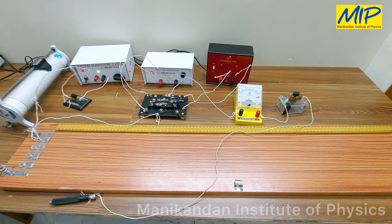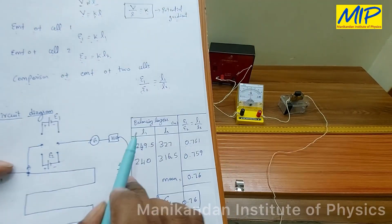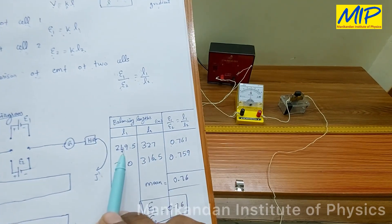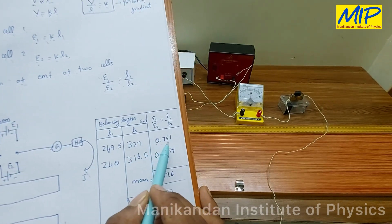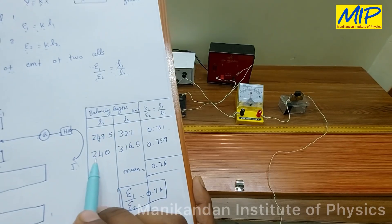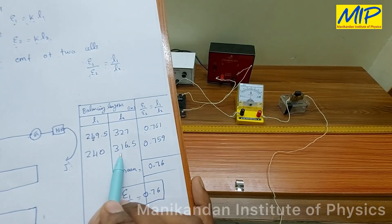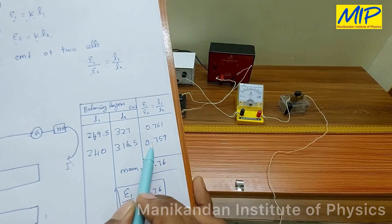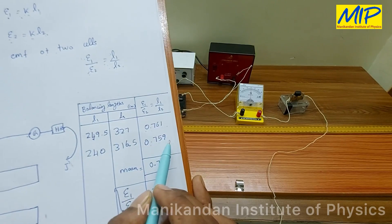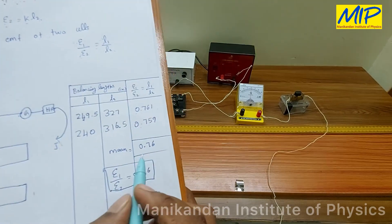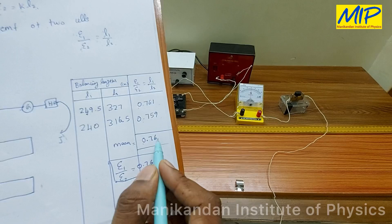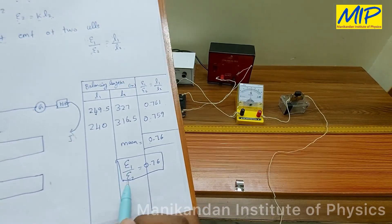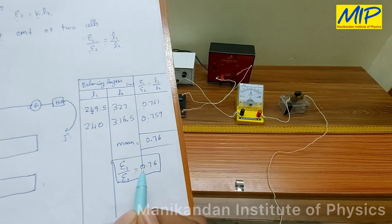Now I will explain the calculation part. Taking the ratio of L1 and L2, which equals E1 by E2: for the first observation, L1 by L2 equals 249.5 by 327, which gives 0.761. For the second observation, L1 is 240 and L2 is 316.5, giving a ratio of 0.759. Taking the average of these two values, I get 0.76. So the ratio of the EMF of E1 to E2 is equal to 0.76.